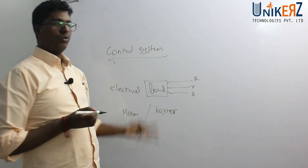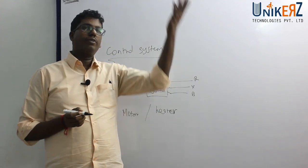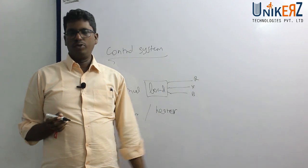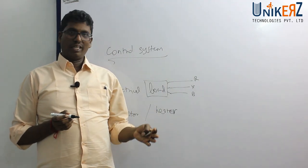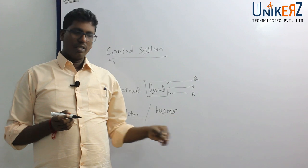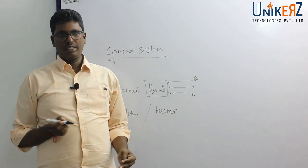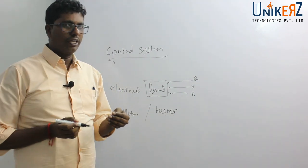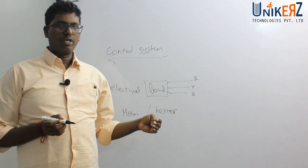For example, one induction motor has a lift up and down. Or a compressor has a motor. Or a pump — there is a pump with an electrical motor.